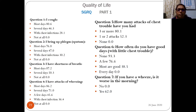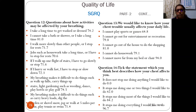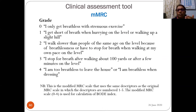Moving to clinical assessment tools: these are tools where the clinician observes and classifies or grades the patient based on their findings. The first widely used tool is the modified Medical Research Council (mMRC) scale. It grades breathlessness from 0 to 4: grade 0 — breathless only with strenuous exercise; grade 1 — breathless when hurrying on level ground or walking up a slight hill; and so on through grade 4. The patient selects a grade on this five-point scale describing everyday activities that provoke breathlessness.